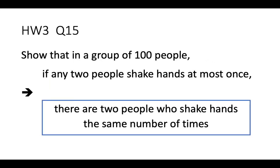The third problem is question 15. This time we want to show that when we have 100 people, if any two people shake hands at most once — so any two persons either shake hands or do not shake hands at all — then we can find two people who shake hands the same number of times. So these are the three questions I want to talk about today.